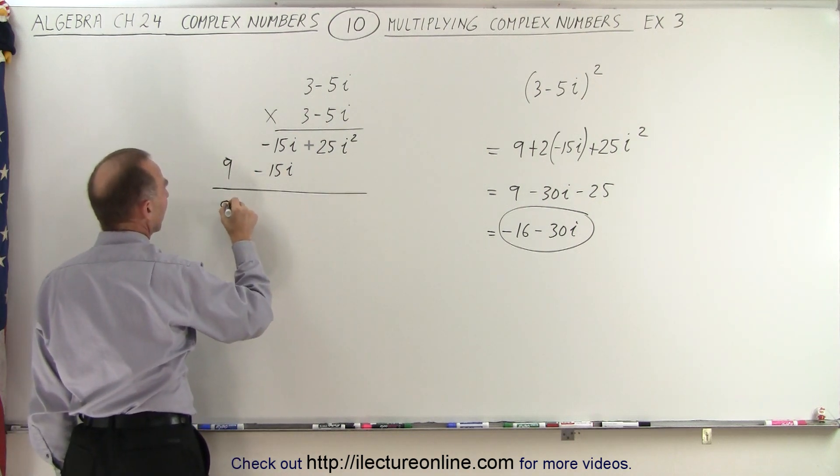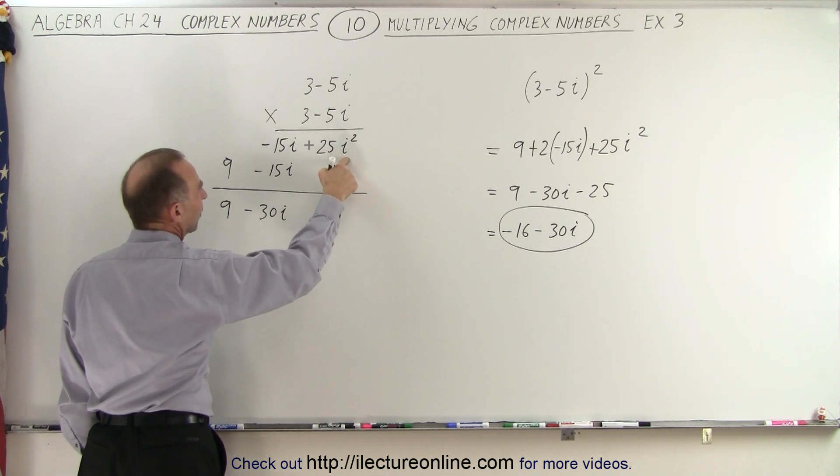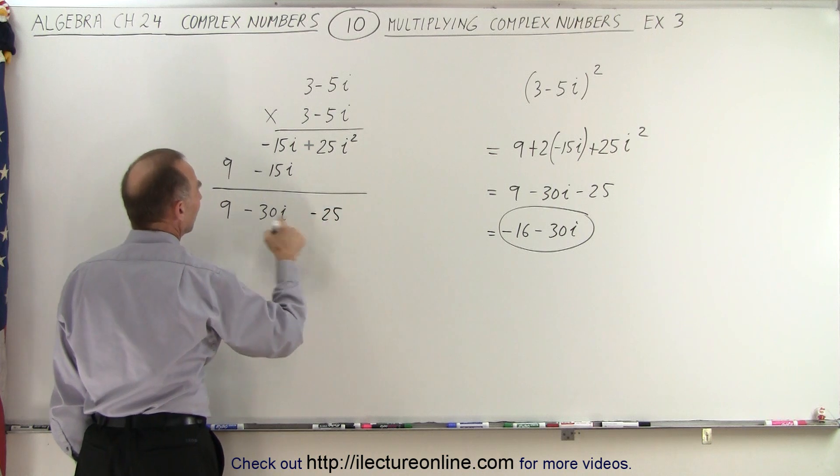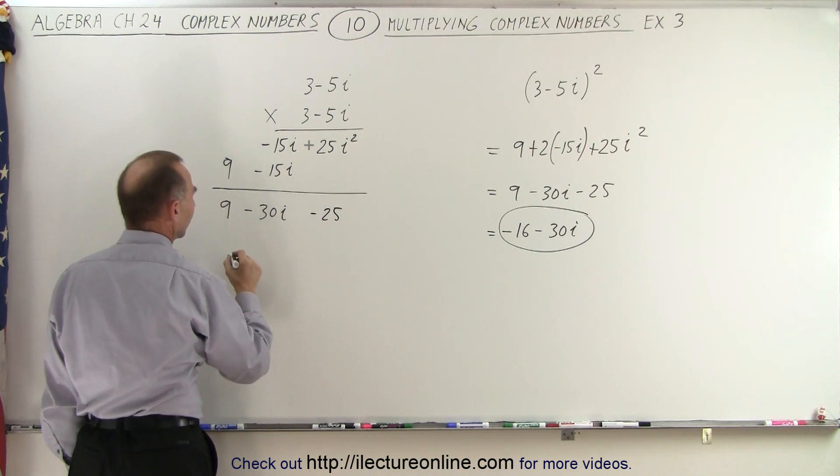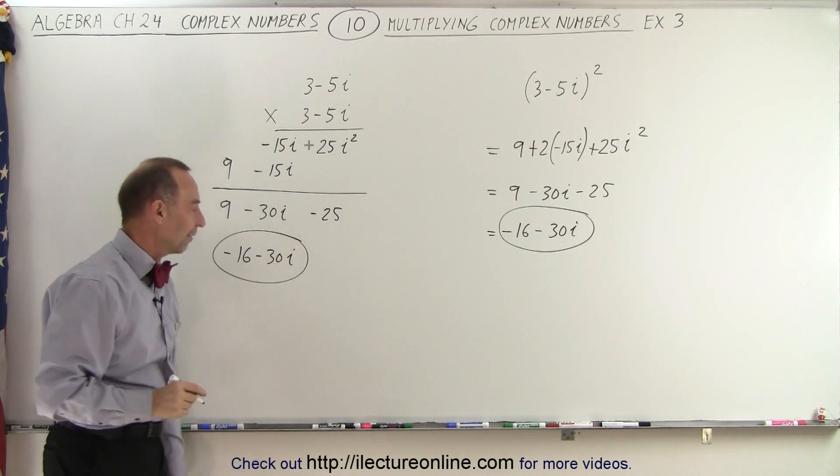When we add all these together, we get 9 minus 30i and 25 times i squared. Remember that i squared is negative 1. That gives us minus 25. Then we add these two together. That gives us minus 16 minus 30i, which is the same that we got on the left side of the board.